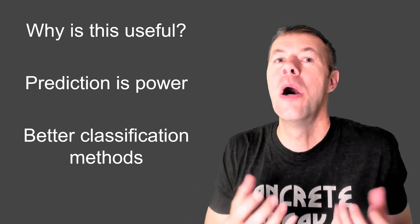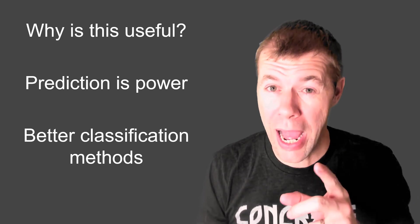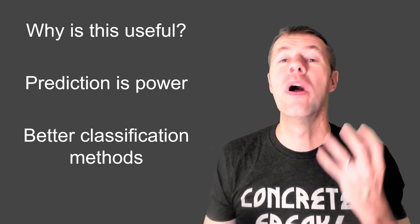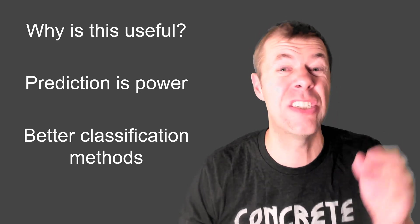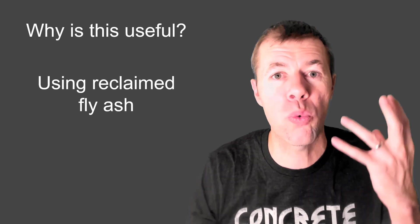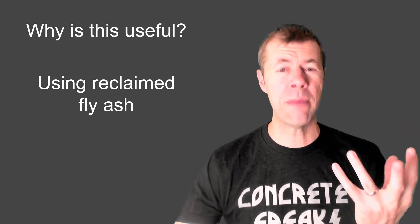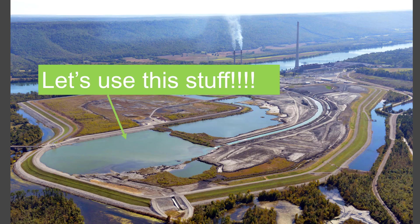So why is this useful? Because prediction is power. If you know what's going to happen, that's extremely powerful. We can have better classification methods out there than just Class C versus Class F. We can actually use this to go after reclaimed fly ash — you know, those ponds where they've been storing fly ash over time? Let's take this stuff and use it for good inside concrete. We're working heavily on that right now.